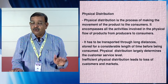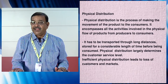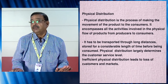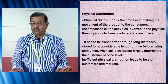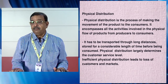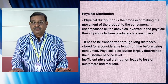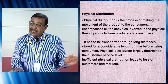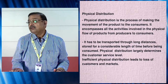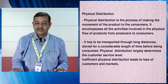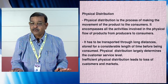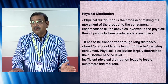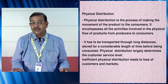This implies lots of movement, lots of transportation, lots of storage, and lots of handling. Physical distribution basically talks about the process of making the movement of the tangible physical product to the consumers across the chain. It encompasses all activities involving the physical flow of products from producers to consumers.